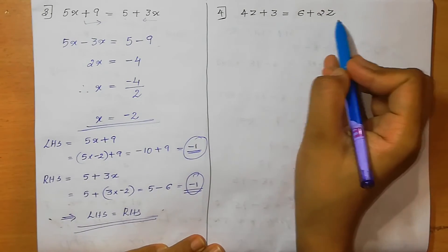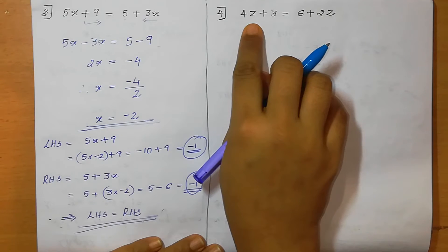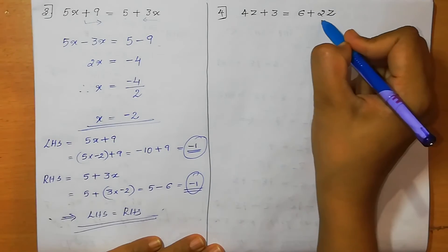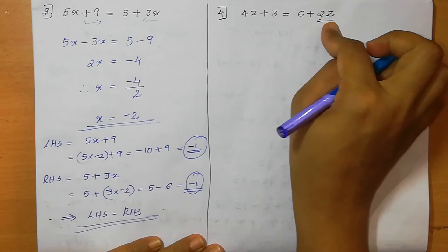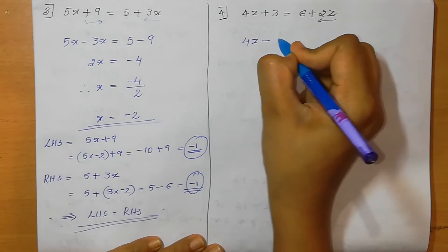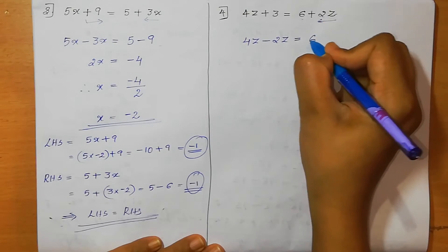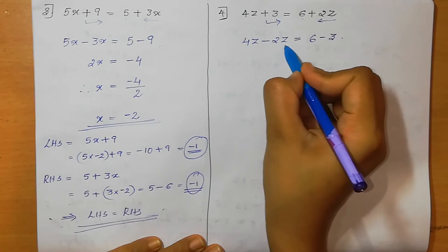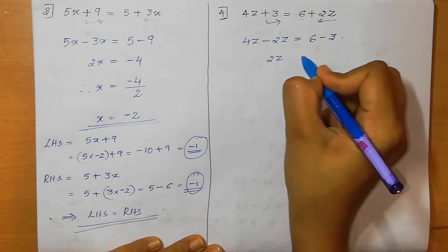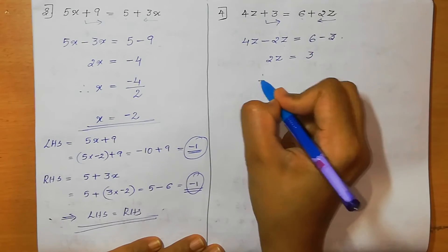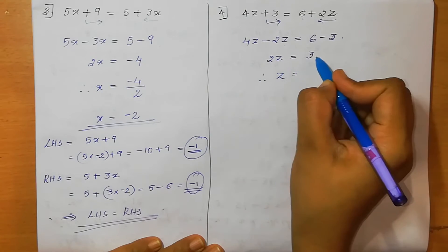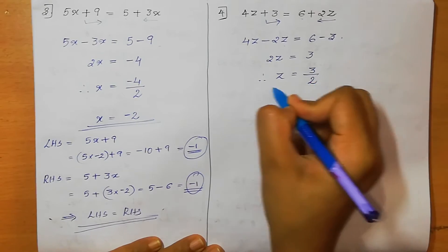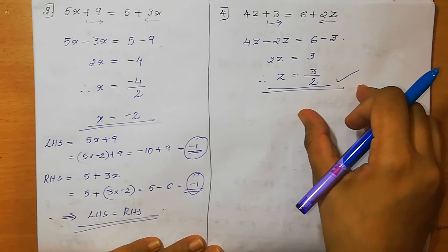Fourth one: 4z + 3 = 6 + 2z. Here we find the value of z. Shifting plus 2z to the left gives minus 2z, and shifting plus 3 to the right gives minus 3. So 4z minus 2z = 6 minus 3, giving 2z = 3. Shifting 2 gives z = 3/2.